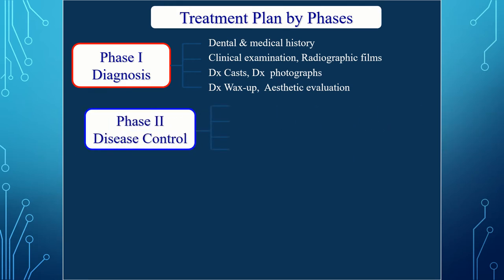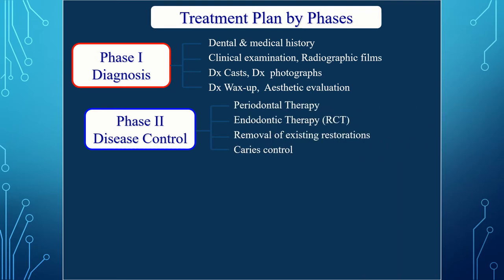Phase two is disease control. If required, periodontal therapy is performed, and if caries is present, endodontic therapy is carried out. Any overhanging restorations or restorations causing irritation are removed as part of caries control.